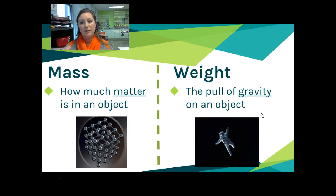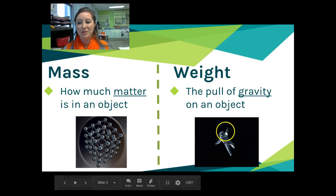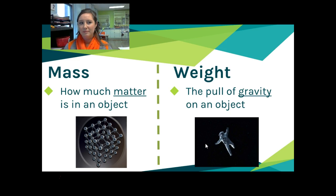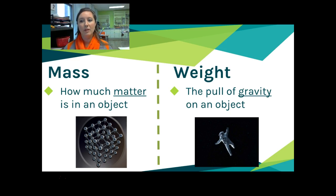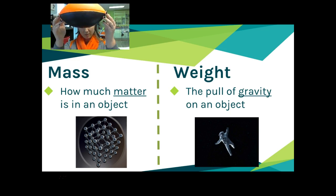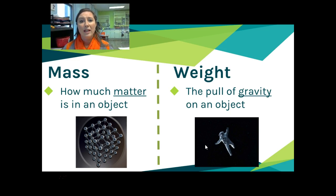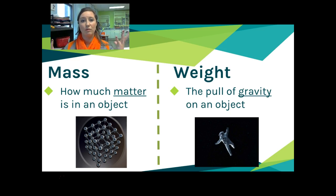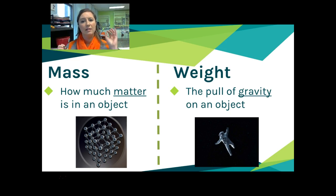Weight is all about the pull of gravity on an object. The image here shows an astronaut out in space. What do we know about gravity in space? There is none — so this astronaut is kind of free-floating with no gravity. On earth, if I hold this football and drop it, it drops down because there's a pull of gravity pulling everything toward earth. That's why we don't just float away. So weight is actually measuring the pull of gravity on an object. So two very different things: mass is measuring matter and weight is measuring gravity.